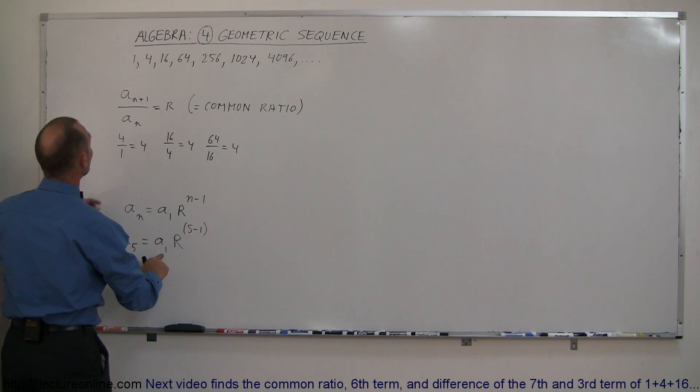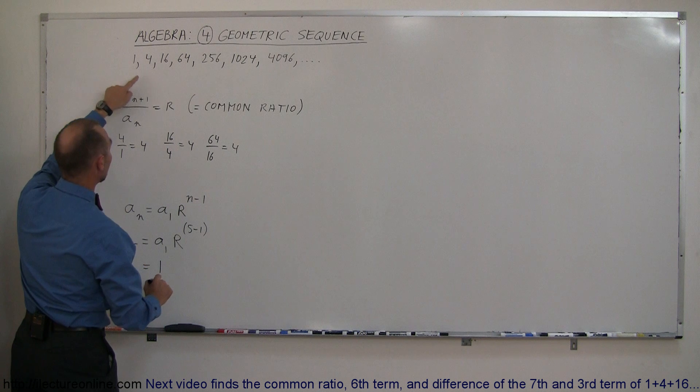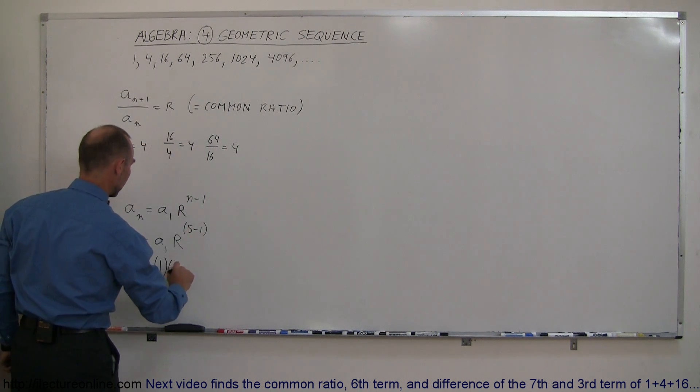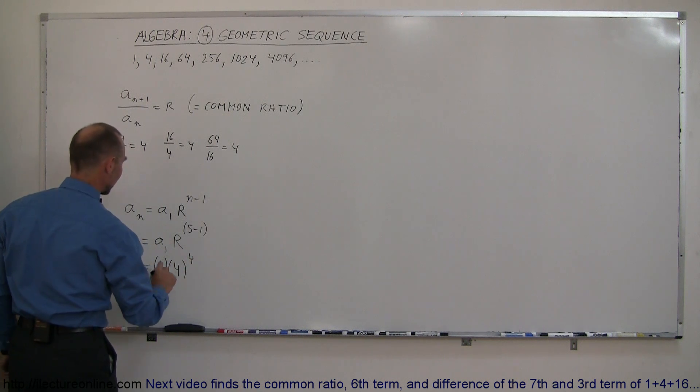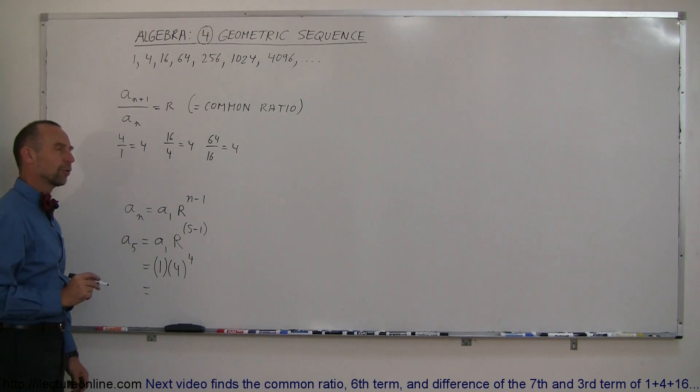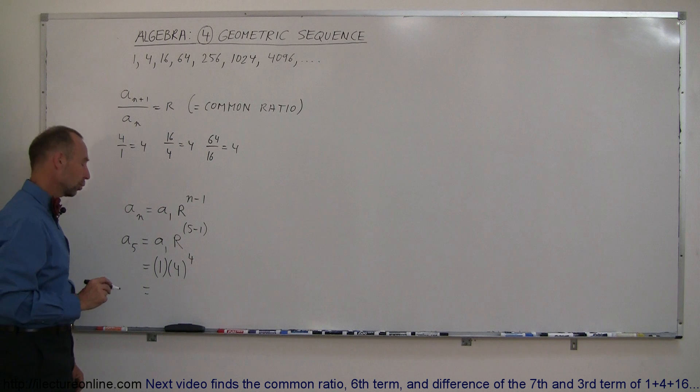So the first one is 1. The common ratio is the number 4, and then 5 minus 1 is 4. So this is equal to 1 times 4 to the 4th power, and 4 to the 4th power is 256.